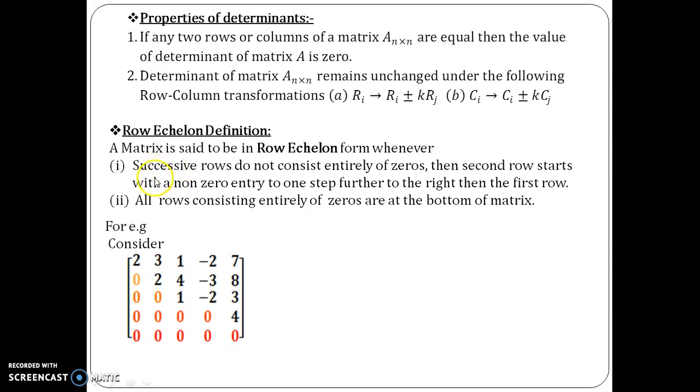Now what it is saying is the second row starts with a non-zero entry one step further to the right than the first row. It means that within the pair of two successive rows, in this pair, first and the second, the second row starts one step further to the right. It means below 2 there should be a zero and it should go to the right. This number 2 over here is the pivot element of that row.